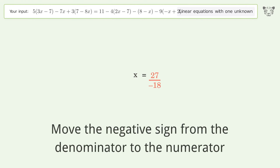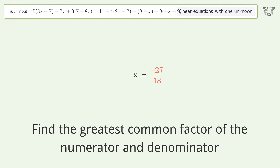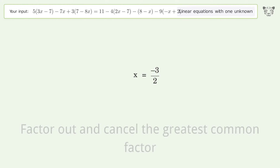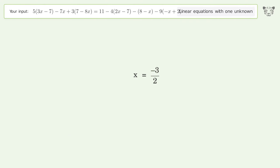Move the negative sign from the denominator to the numerator. Find the greatest common factor of the numerator and denominator. Factor out and cancel the greatest common factor. And so the final result is x equals negative 3 over 2.